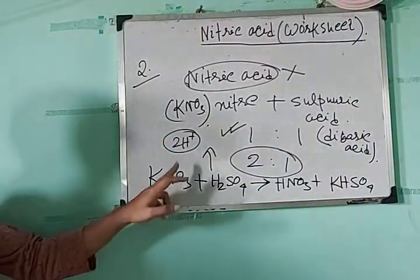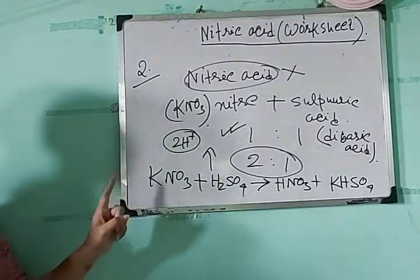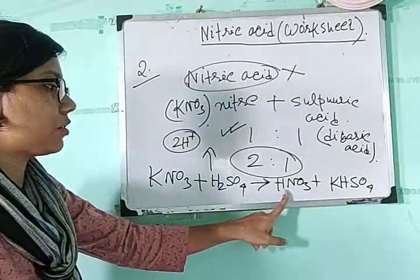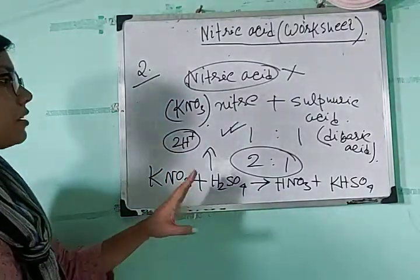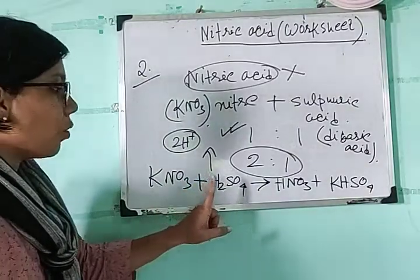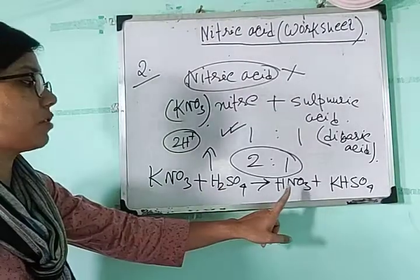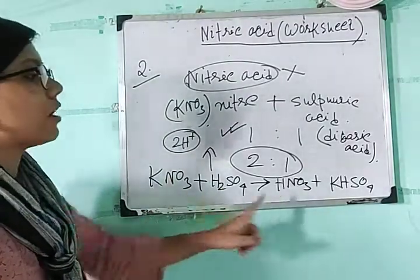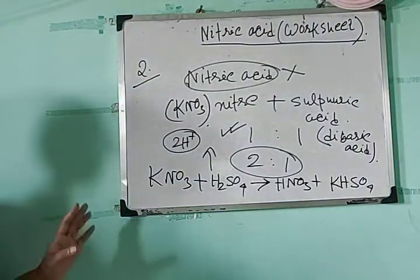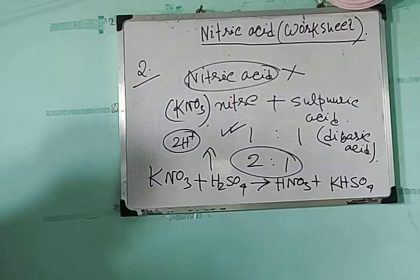Nitric acid is a monobasic acid, and only one hydrogen is required for its preparation. So the ratio is taken as 1:1 because only one proton is utilized in the preparation of nitric acid, and the other one is utilized as a side product — potassium bisulfate. That is the answer.